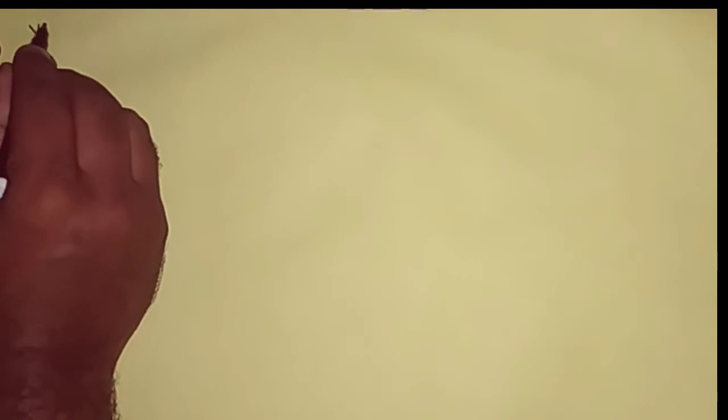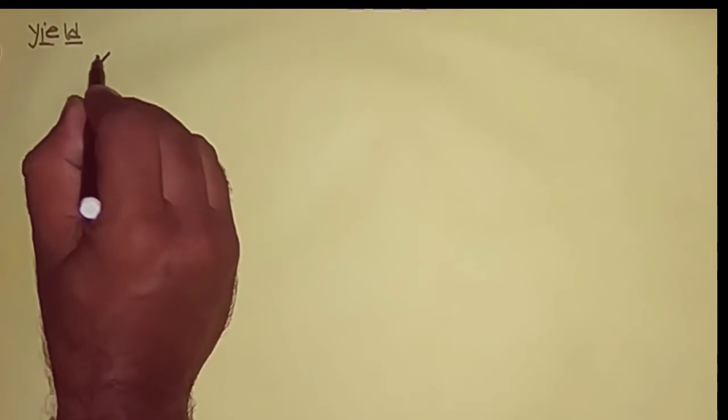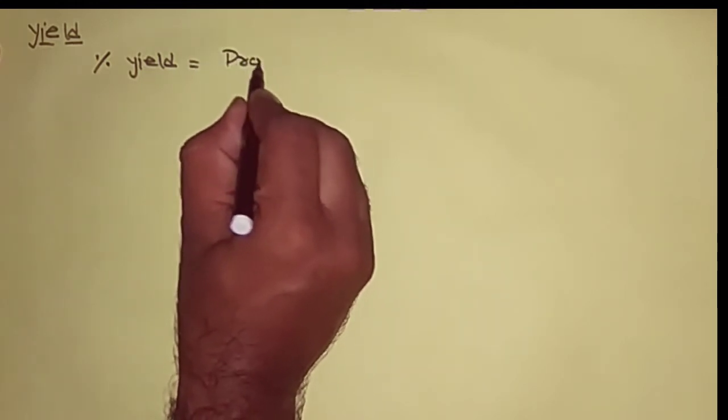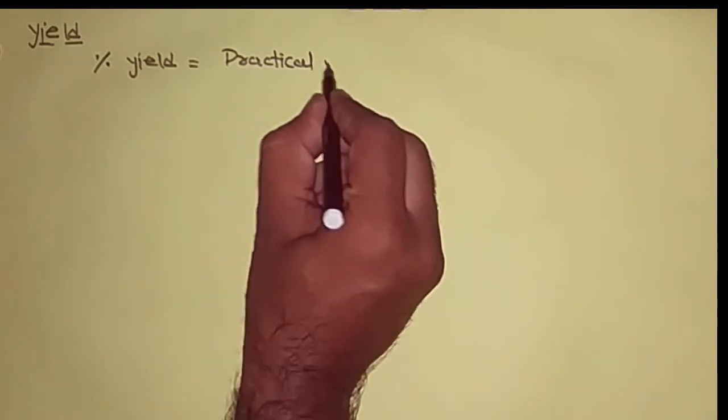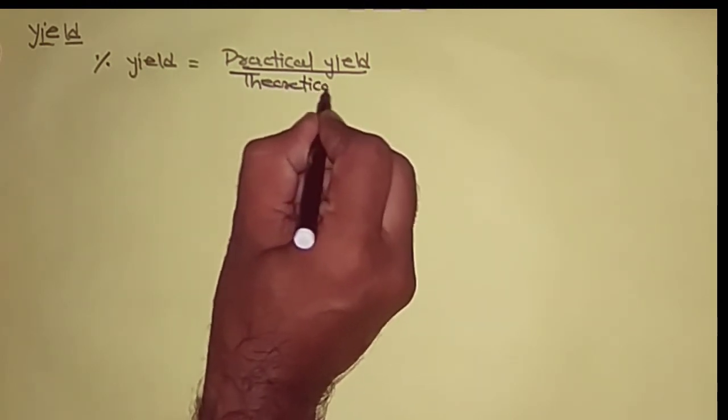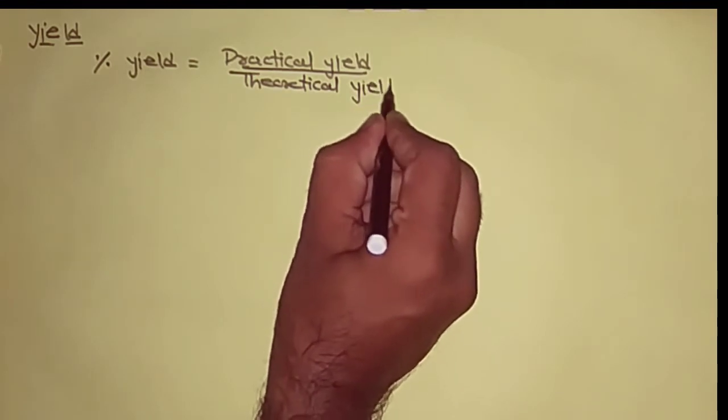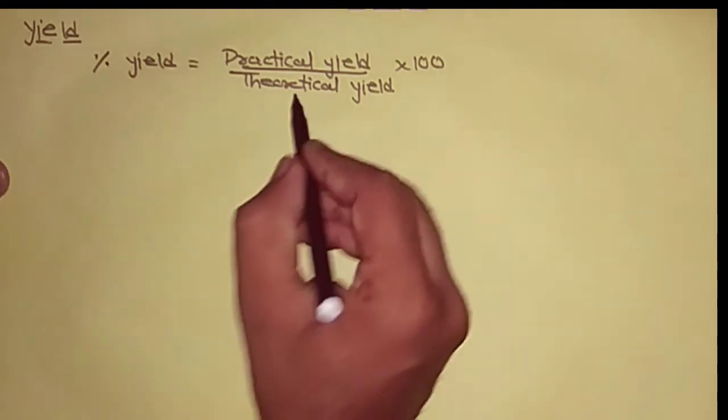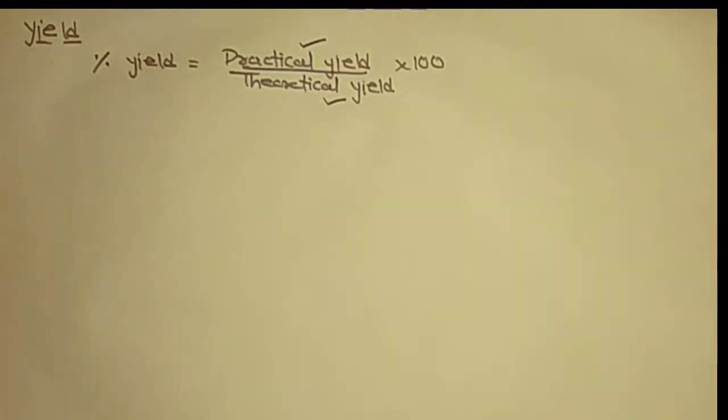Next topic is yield of the reaction. It tells us about how much amount of reactant gets converted into product and it is generally calculated in terms of percentage. We write it as percentage yield by using simple formula: practical yield upon theoretical yield times 100. It gives us idea about the percentage yield. But first, we need to understand what is theoretical yield and what is practical yield. Then only we can understand the meaning of percentage yield.